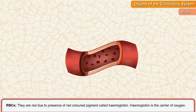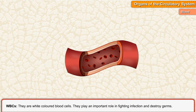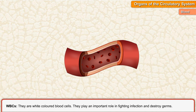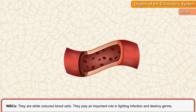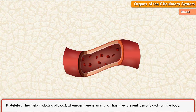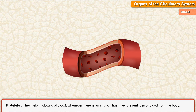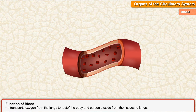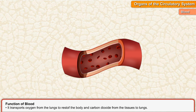RBCs are red due to the presence of a red-colored pigment called hemoglobin. Hemoglobin is the carrier of oxygen. WBCs are white-colored blood cells that play an important role in fighting infection and destroying germs. Platelets help in clotting of blood whenever there is an injury, thus preventing loss of blood from the body.